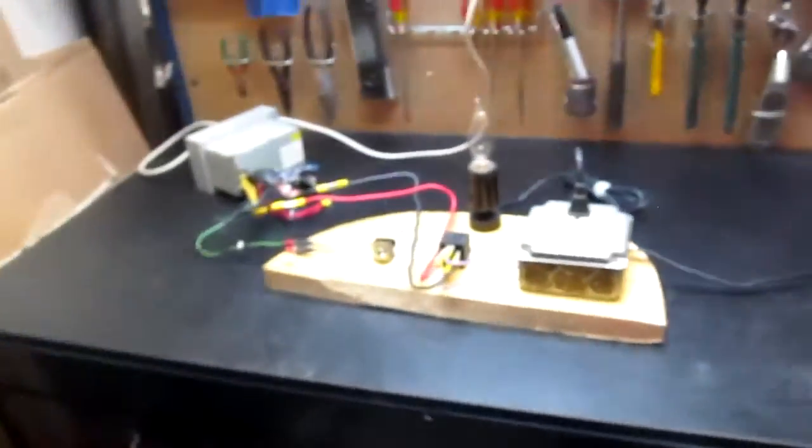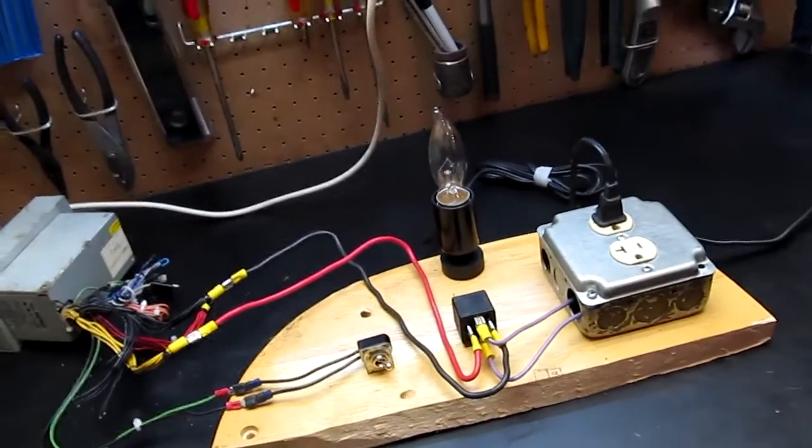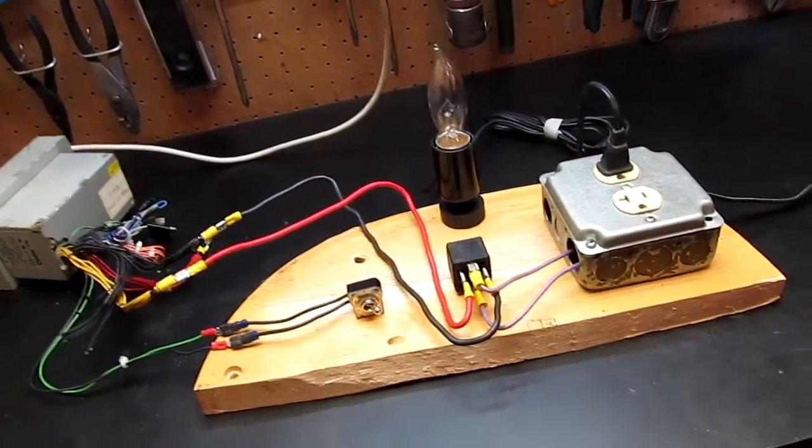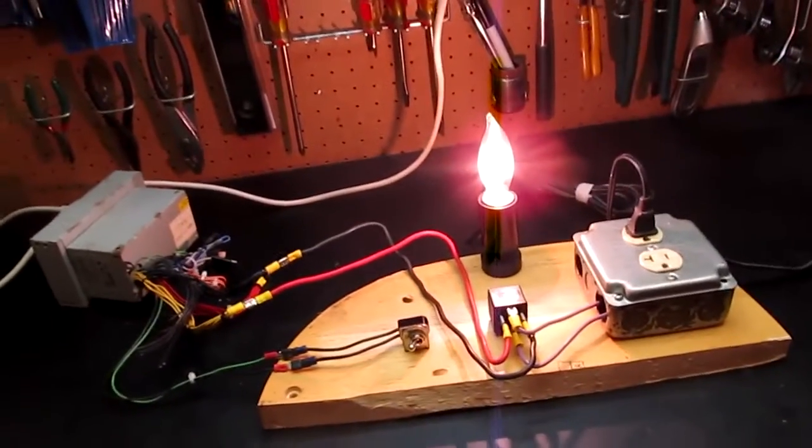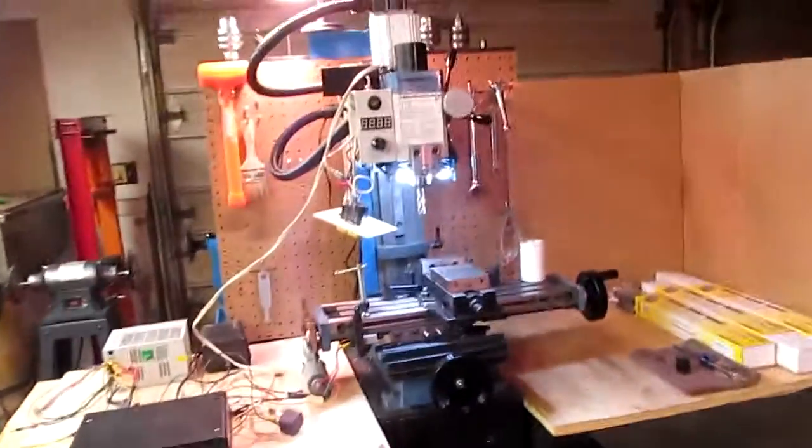I had a question the other day, can a 12 volt automotive relay be used to switch a low load 120 volt household AC circuit? And the answer is yes. Didn't know that. I never even thought about it before. So with that in mind, I'm taking advantage of that on this mill.